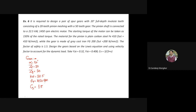Material for pinion is plain carbon steel: Sut(pinion) = 410 N/mm². The gear is made of gray cast iron: Sut(gear) = 200 N/mm². Both pinion and gear are made of different materials having different ultimate tensile strength. Factor of safety Fs = 1.5. Design is based on Lewis equation.